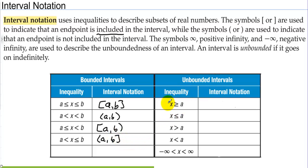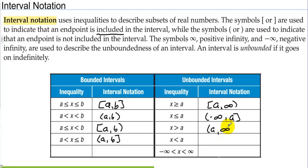Let's look at unbounded intervals. Here we have x is greater than or equal to a, meaning x is going from a to infinity. Here we have x is less than or equal to a, so we're going from negative infinity to a and we're going to include a. We never include infinities — infinity or negative infinity will always have a parenthesis. Here we have x is greater than a, so we start with a but don't include it and go to infinity. Here we have x is less than a, so we go from negative infinity to a. And this last one is completely unbounded, going from negative infinity to infinity.